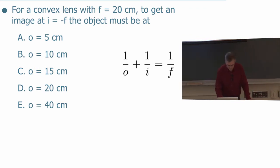Okay, so let's just do a clicker question using the lens equation. I'll give you plenty of time. You can talk to your friends, write it out, do the solution. On a piece of paper. For a convex lens with focal length 20 centimeters to get an image at i equals minus f, the object must be at what? I urge you to do this algebraically rather than just cramming numbers in right away.